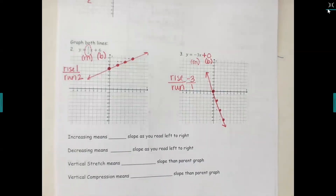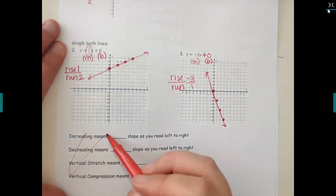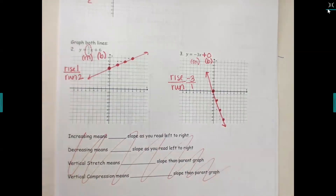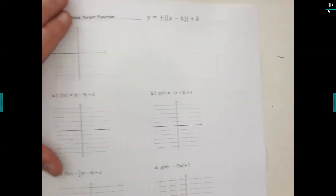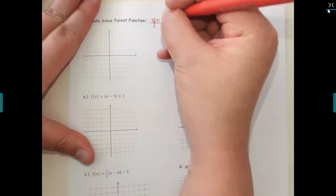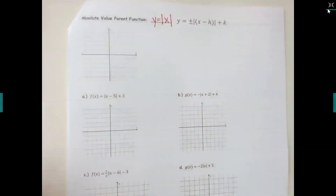We're going to skip the bottom fill-in-the-blanks and come back to cover that next time. You've already finished the linear family — go ahead and turn the page. The next family is absolute value. Write down: y equals the absolute value of x, with vertical bars in front of and after the x.